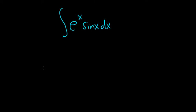Integrate e to the x times the sine of x. This is a pretty famous integral, so let's do it. We'll start by calling this i, and the trick is to use integration by parts two times.